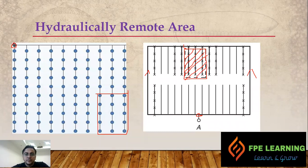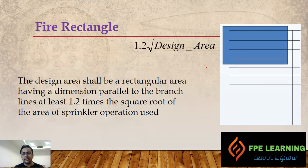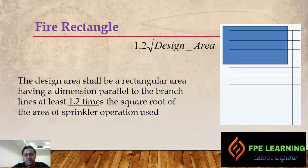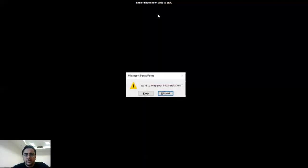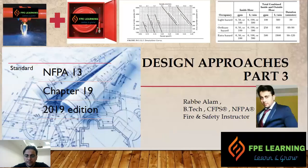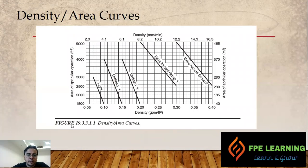Next we have the design areas, the fire rectangle. The design area shall be rectangular having a dimension parallel to the branch line at least 1.2 times the square root of the area of sprinkler operation. Let's say if your project is for OH-1, going to the graph.